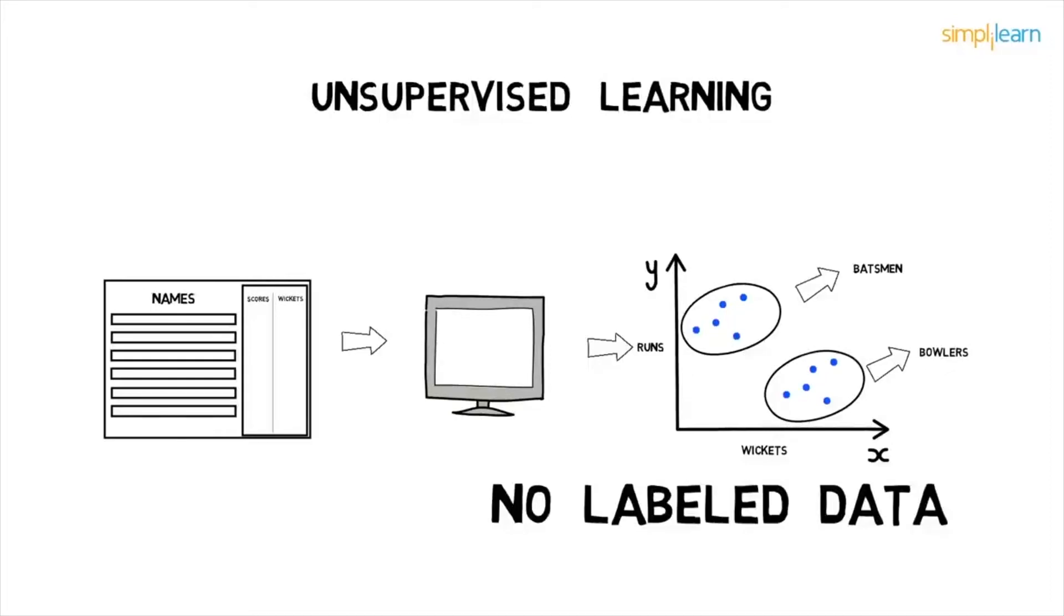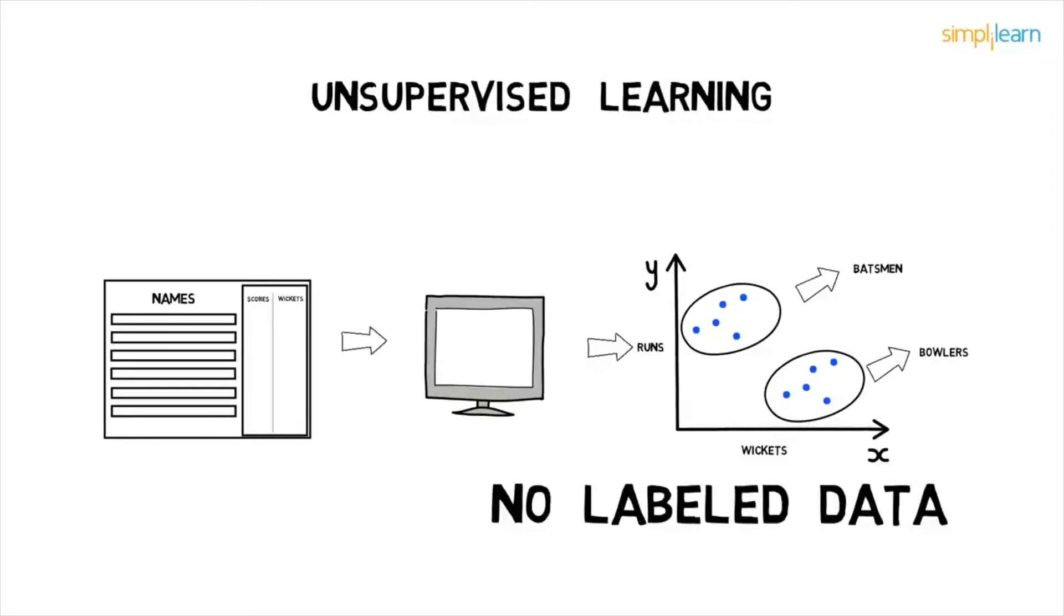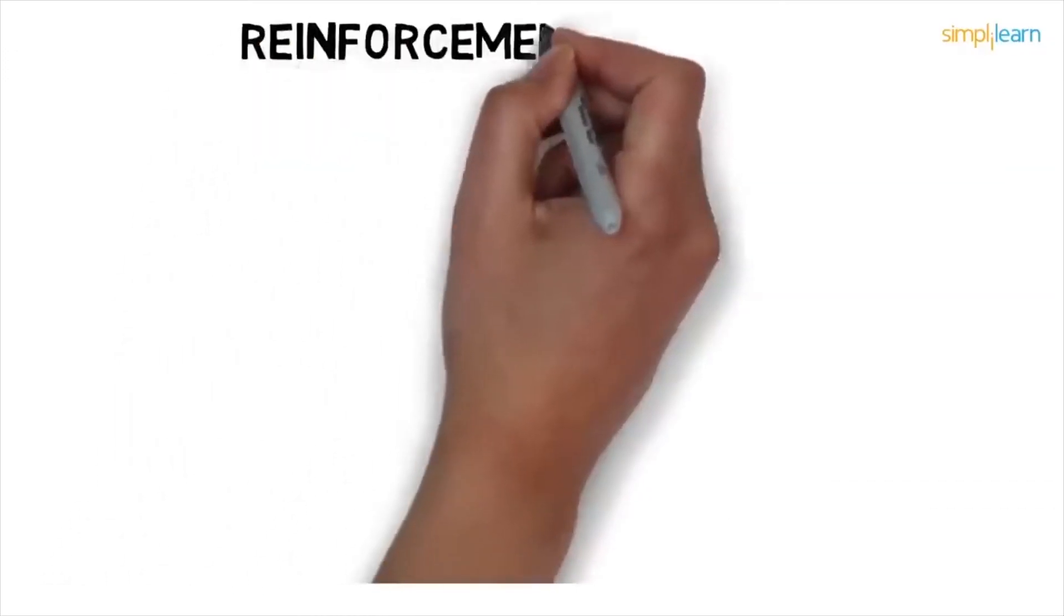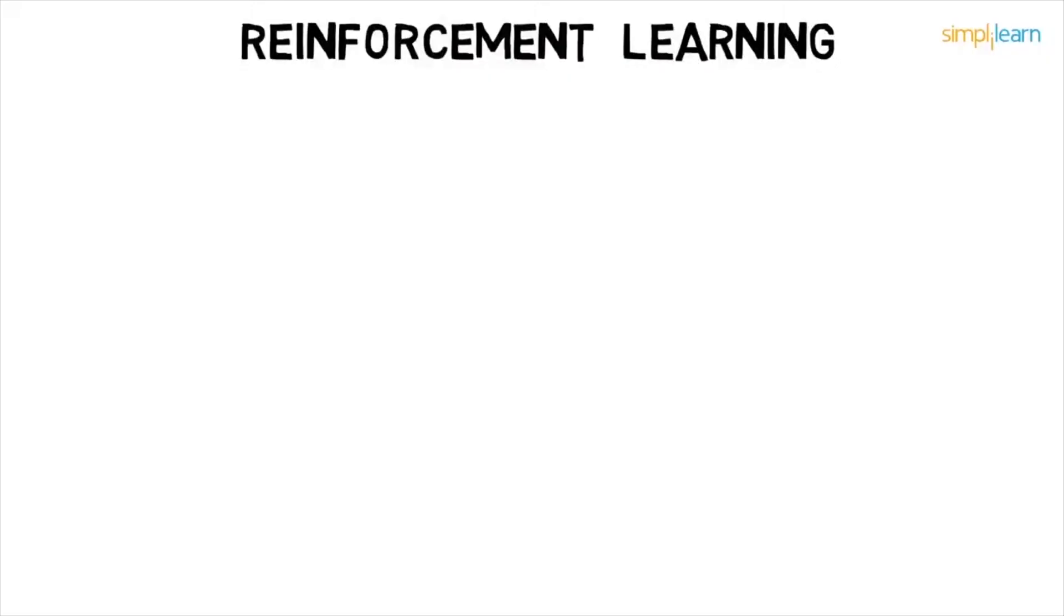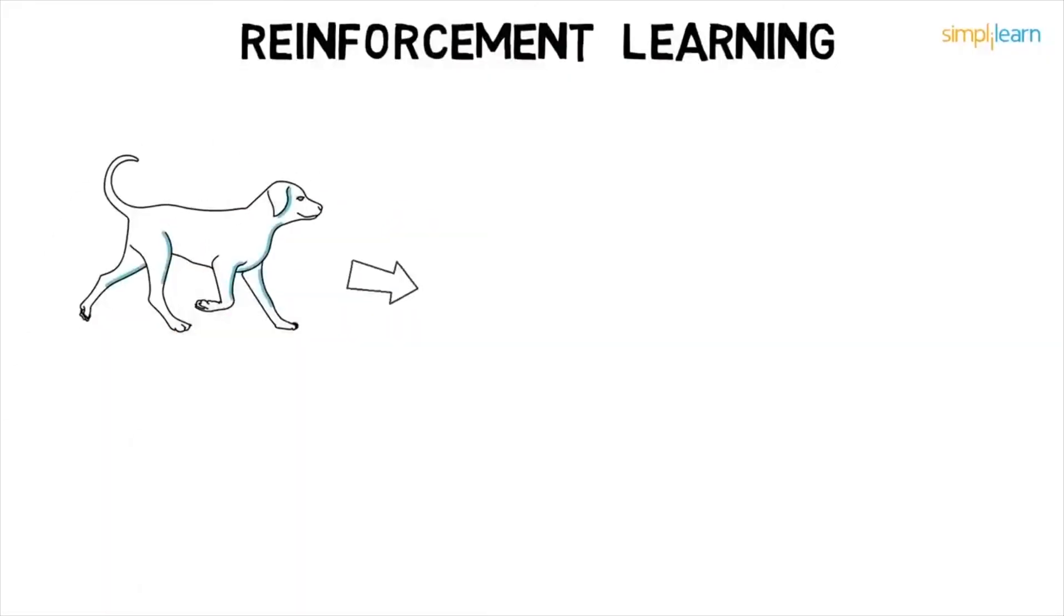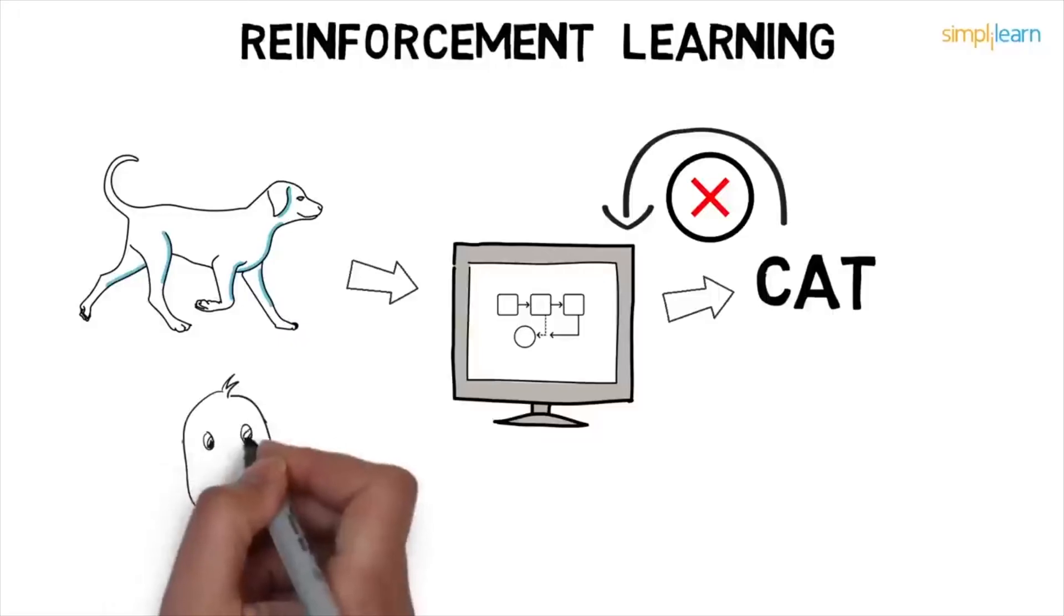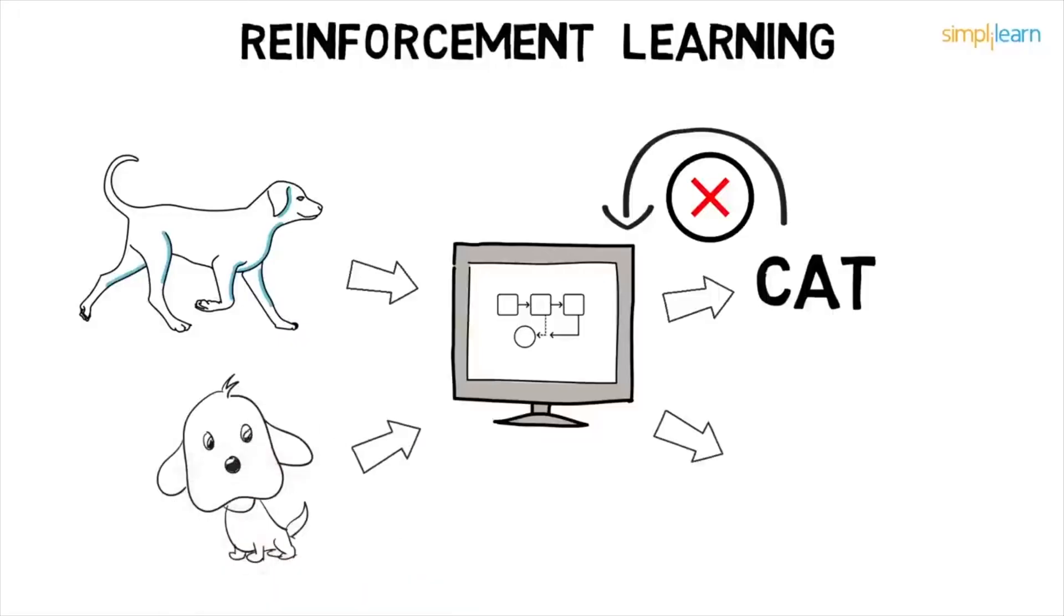We saw supervised learning where the data was labeled and unsupervised learning where the data was unlabeled. And then there is reinforcement learning, which is reward-based learning, or we can say it works on the principle of feedback. Here, let's say you provide the system with an image of a dog and ask it to identify it. The system identifies it as a cat. So you give negative feedback to the machine saying it's a dog's image. The machine will learn from the feedback and finally, if it comes across any other image of a dog, it will be able to classify it correctly.